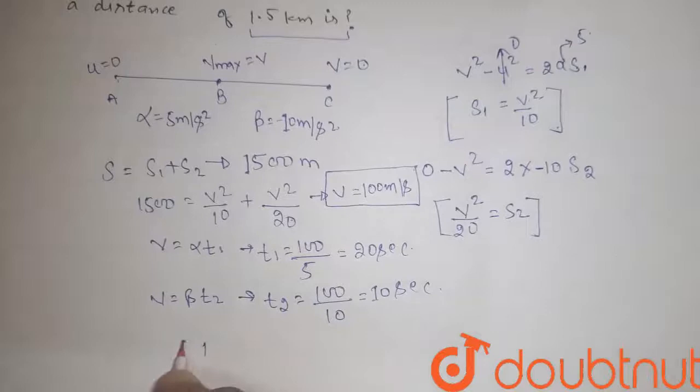Further, V is equal to beta T2. From here, we get the value of T2 is 100 divided by beta = 10, which would be equal to 10 seconds. So total time is T1 plus T2, that would be 30 seconds.